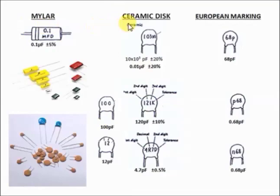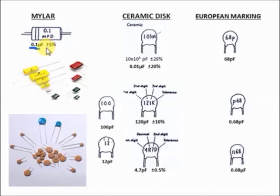Another type of capacitor is the mylar capacitor and the ceramic disc capacitor — different types but with the same function. For the mylar capacitor, when you read it and see '0.1', you copy the number as 0.1, and the symbol indicates microfarad. So the reading is 0.1 microfarad. The 'D' is the tolerance; looking it up in the table, D is equivalent to plus or minus 0.5%.